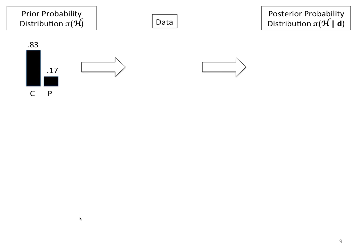Here is the setup. These are your prior probabilities in cold (C) or plague (P). Why is it 0.83 versus 0.17? That's because 5 out of the 6 rolls gets you a cold, and 1 out of the 6 rolls gets you the plague. You're going to see some data, and based on that data, you're going to update your probability distribution.